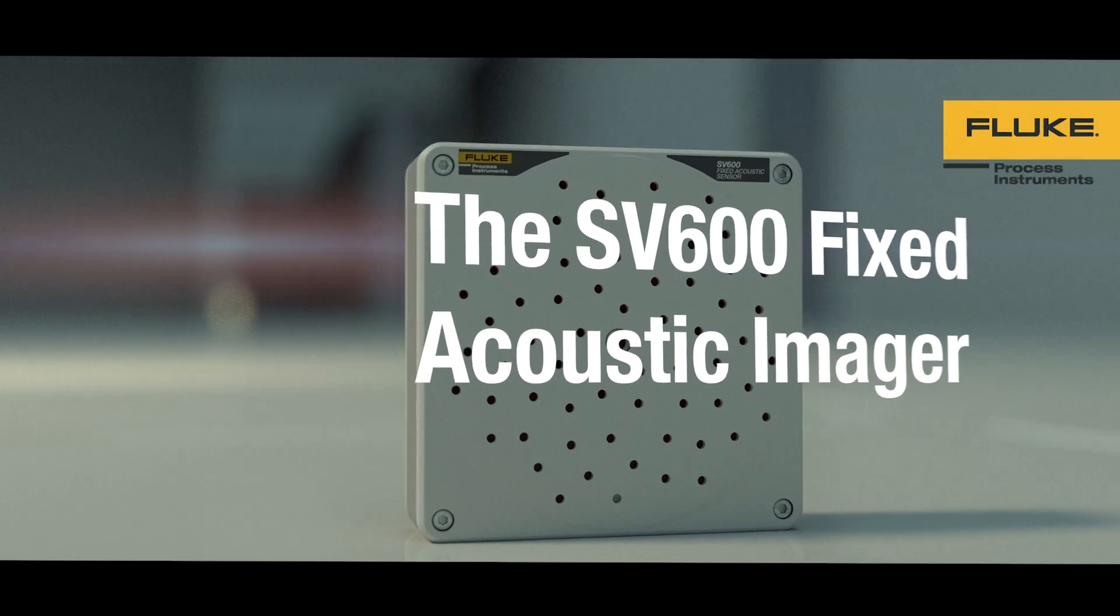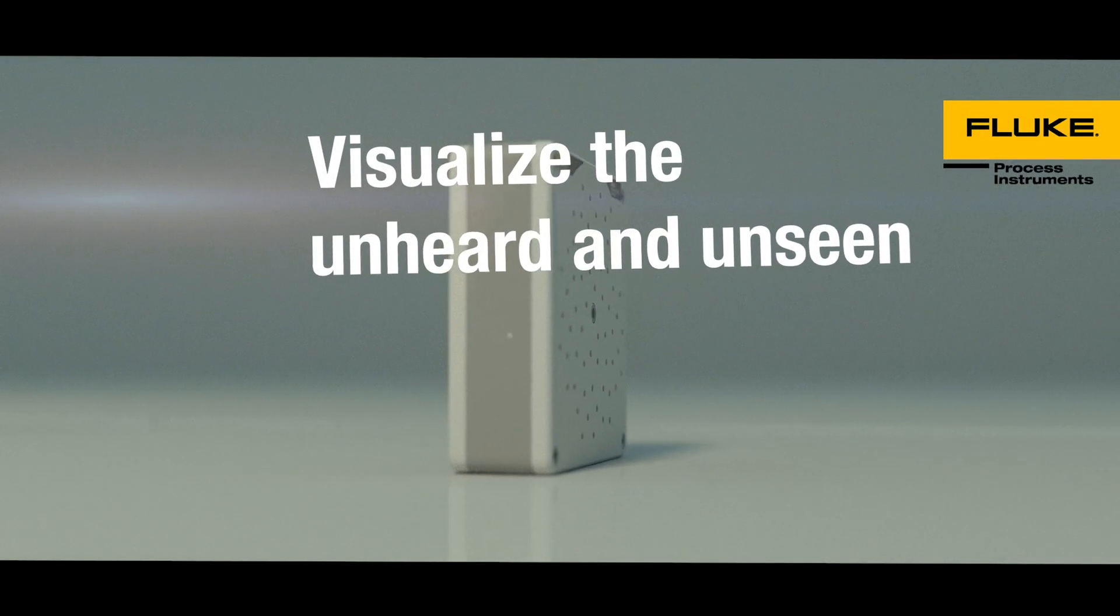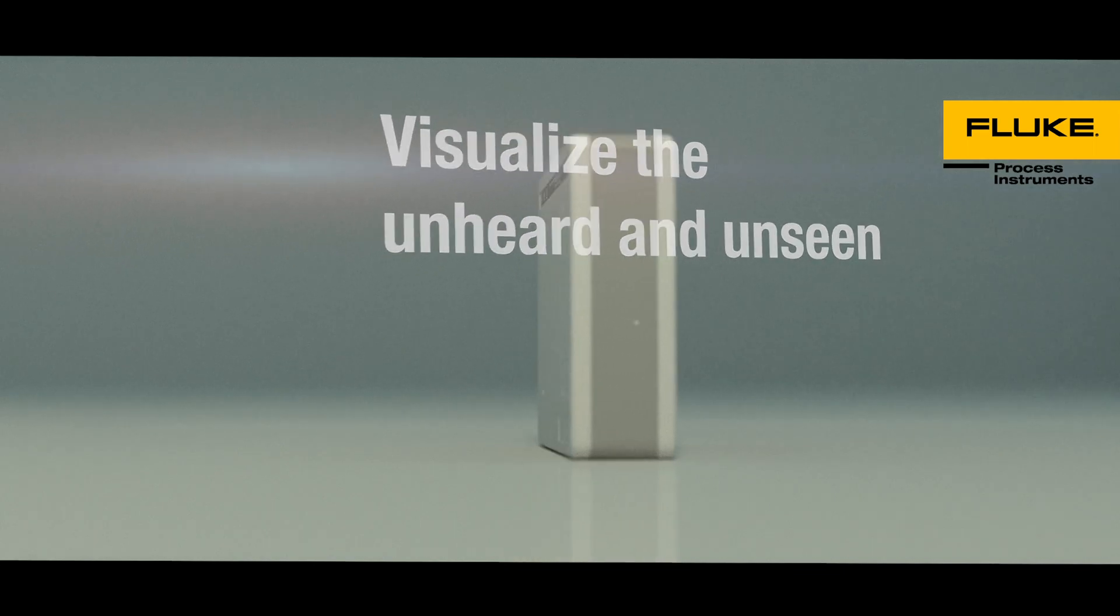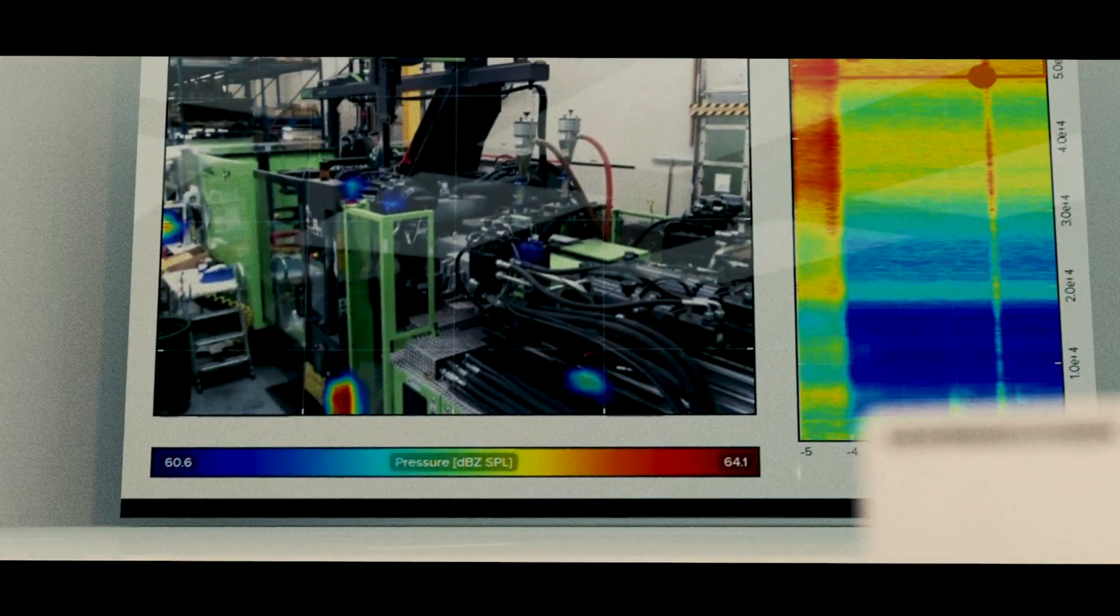Visualize the unheard with the Fluke Process Instruments SV600 Fixed Acoustic Imager. Vibrations from a worn bearing, air leak from a compressor hose, gas escaping from a finished product.